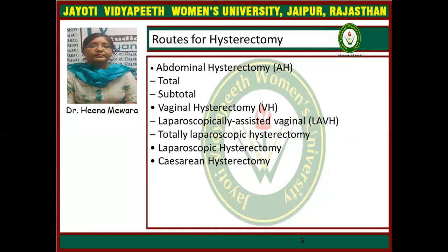Now, routes for hysterectomy. There are four routes: abdominal, vaginal, laparoscopic, and caesarean hysterectomy. Abdominal hysterectomy is done in the form of total and subtotal. Vaginal hysterectomy is done either as laparoscopically assisted or totally laparoscopic hysterectomy.